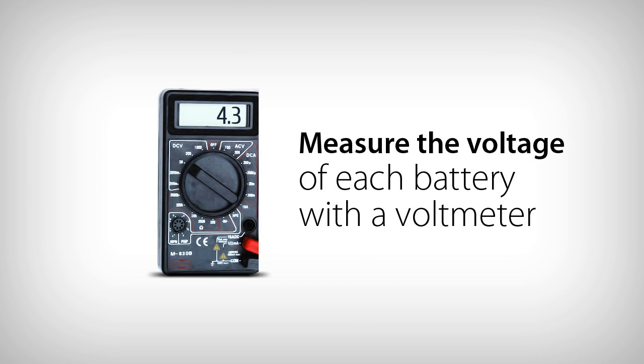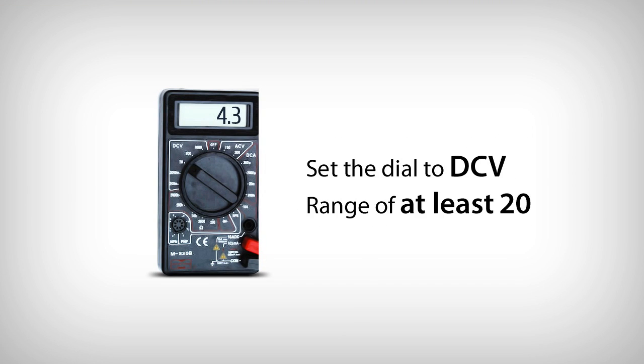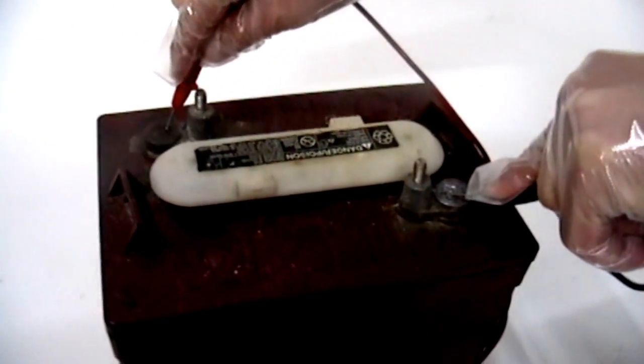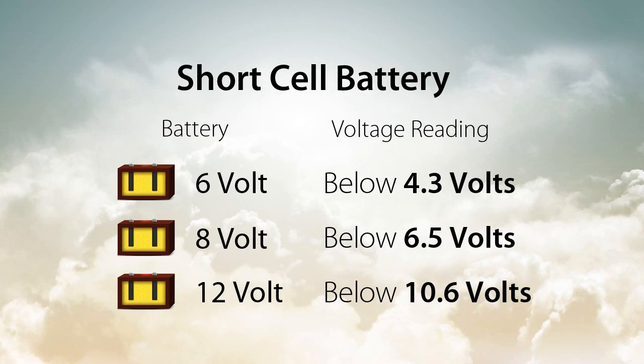To use a voltmeter, set the dial to DCV with a range of at least 20. Hold the red lead from the voltmeter to the positive battery terminal. Then hold the black lead from the voltmeter to the negative battery terminal. The voltage of the battery will appear. Reference this chart to determine if a battery has a short cell.